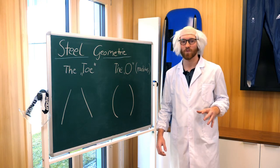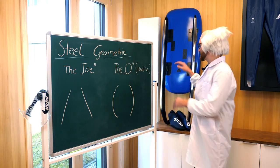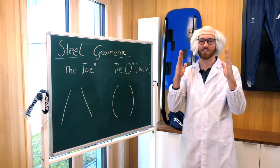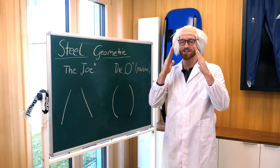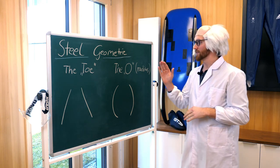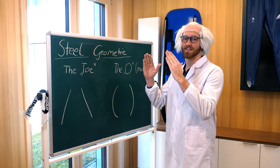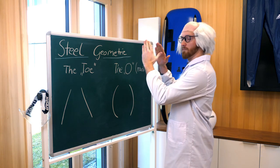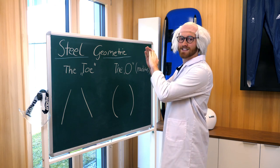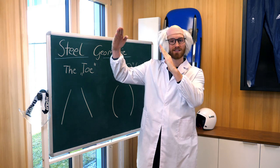Understanding how a sled works is quite tricky. The steels are not completely parallel to each other — they have an angle called toe. The toe allows the slider to steer the sled by putting pressure onto one coffin, causing the steels to dig into the ice more, which turns the sled.